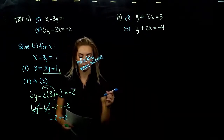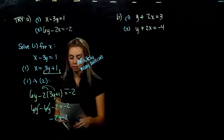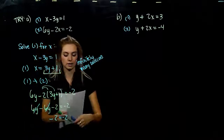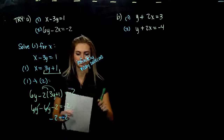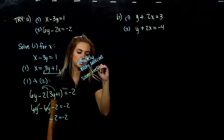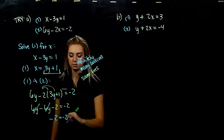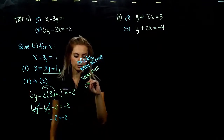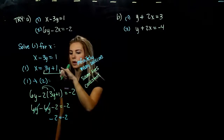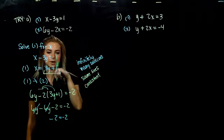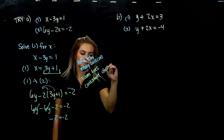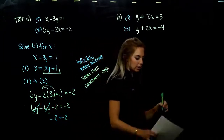We can plug in all real numbers and it will make it true. What does that tell us about these two lines? They're exactly the same. What kind of system? We have solutions, so it's consistent. Whatever I plug into one satisfies the other at the exact same time — they are dependent on each other, exactly the same. Consistent, dependent.